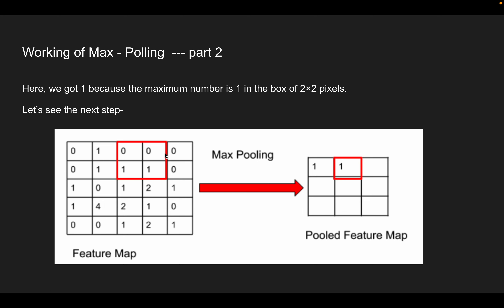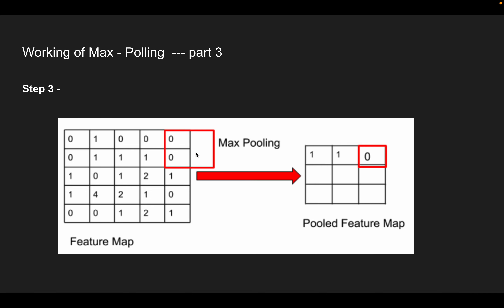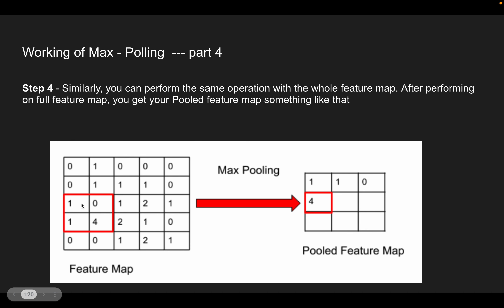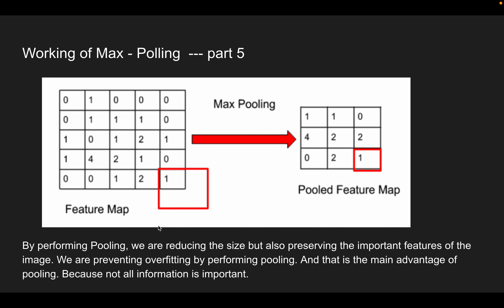Continuing the max pooling example: for region [0,0,1,1] the maximum is 1. For region [0,0,0,0] the maximum is 0. Moving down, for region [1,0,1,4] the maximum is 4, so output is 4. Similarly for region [1,2,2,1] you take the maximum. After completing all these pooling operations, the output dimension becomes a reduced feature map — for example, a 3x3 output from a 5x5 input — containing the most important feature values like 1, 1, 0, 4, 2, 1 at the significant positions.